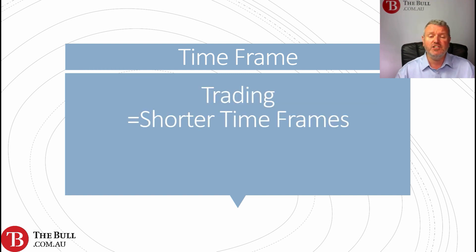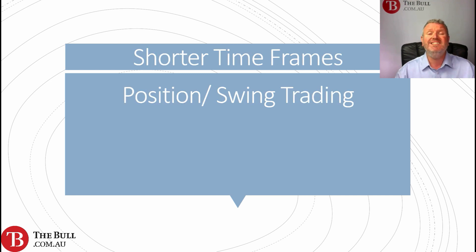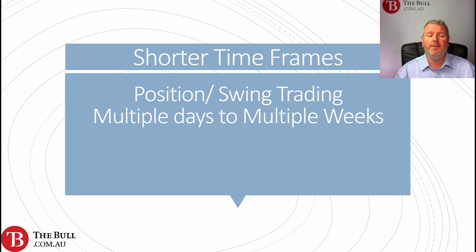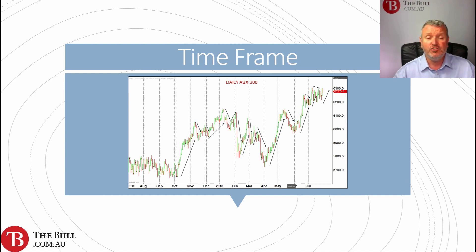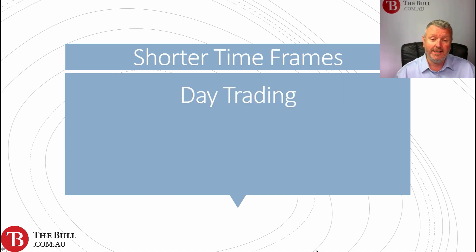Trading involves definitely shorter time frames — under three months. Within the trading bracket we can break it down further: position and swing trading covers multiple days to multiple weeks. On a daily ASX 200 chart you can see various arrows showing the different swings in the market. A swing or position trader looks to benefit from those moves over days or weeks, but not the traditional buy-and-hold theme we associate with investing.